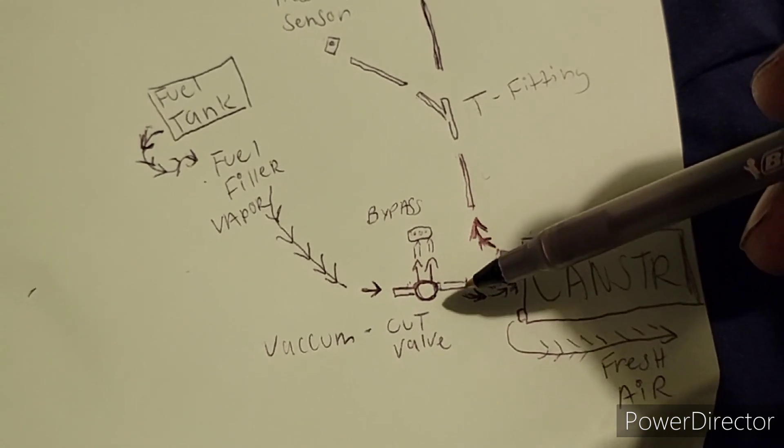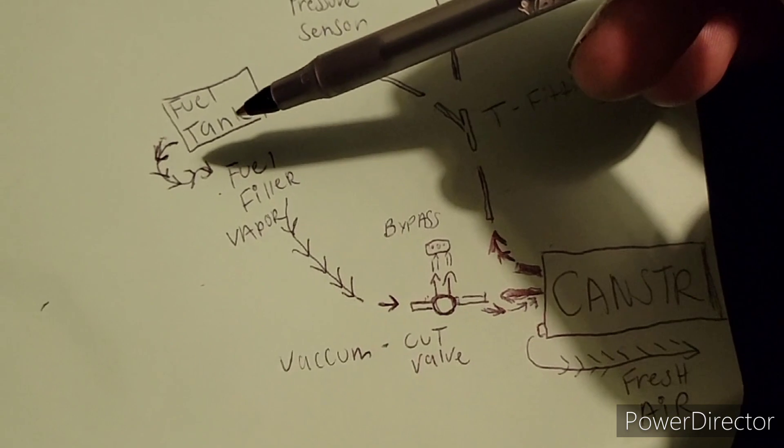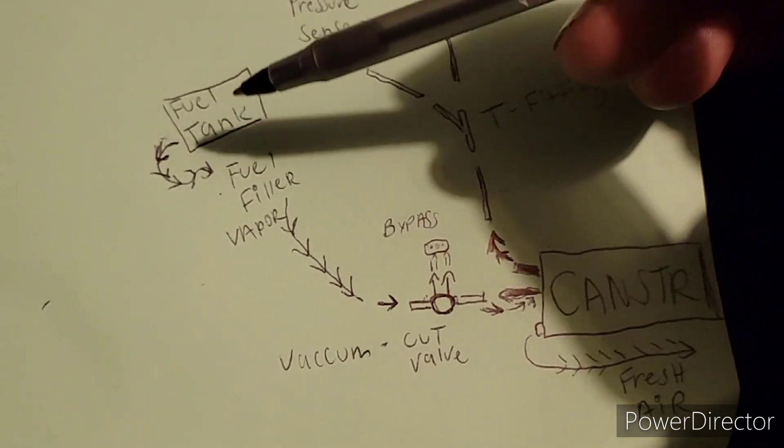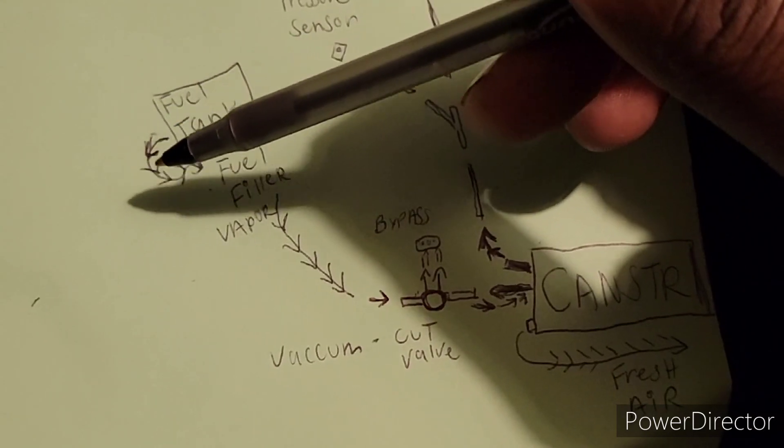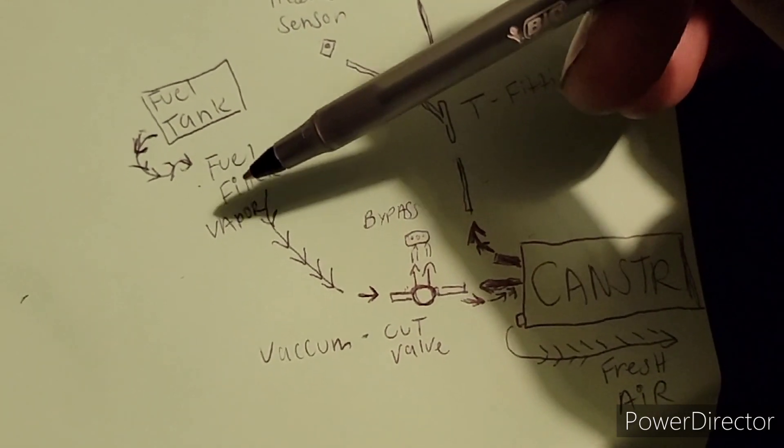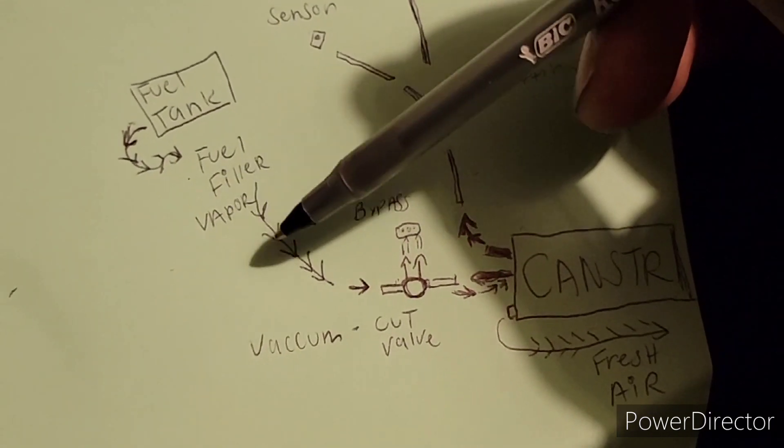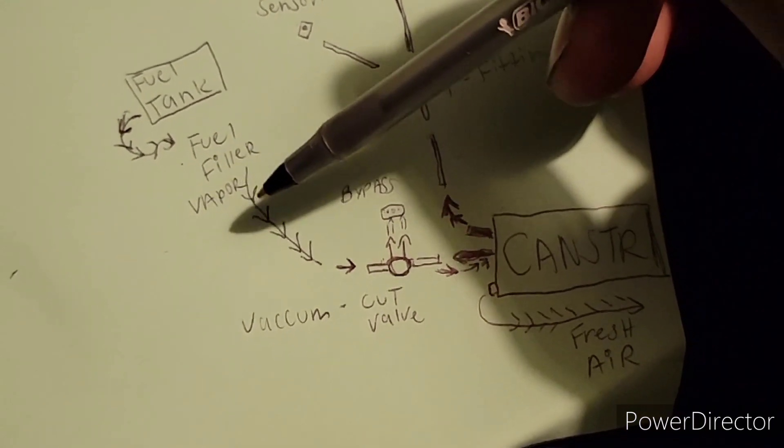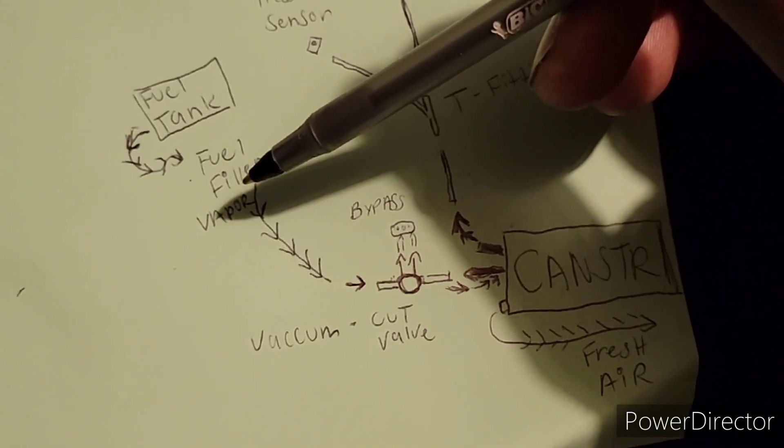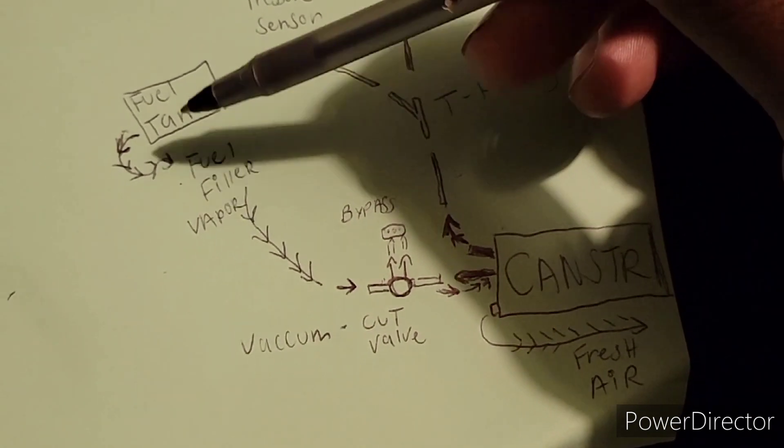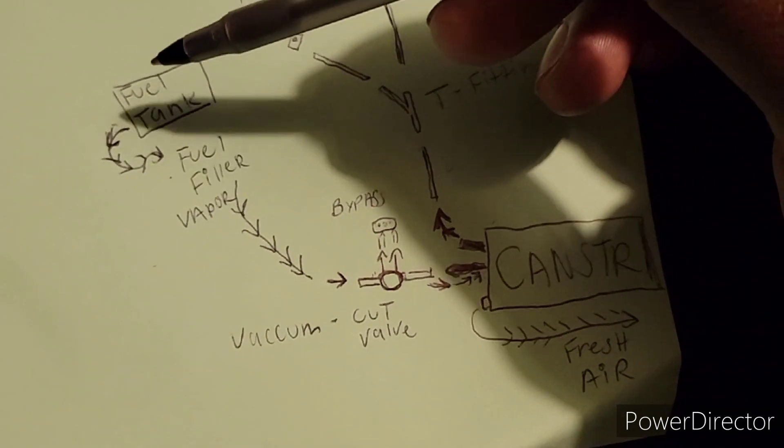So what I'm guessing is it all starts at the fuel tank. The fuel tank has fuel vapor that makes its way through its own hose up to where the filler neck is, and there's a hose that runs from the fuel filler, right? And it takes that fuel vapor from you pumping in gas and from the fuel tank and it sends it down to that cut valve.